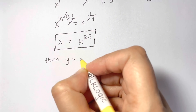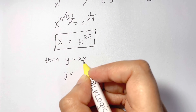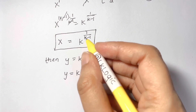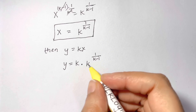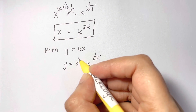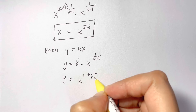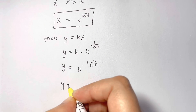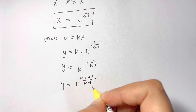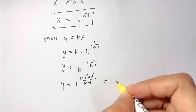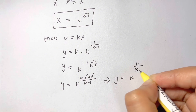Since y equals kx, we substitute: y equals k times k to the power of 1 over k minus 1. Since we have the same base with multiplication, we add the powers: y equals k to the power of 1 plus 1 over k minus 1, which simplifies to k to the power of k over k minus 1.